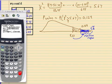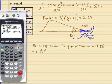Since our p-value is greater than an alpha of 5%, we fail to reject.